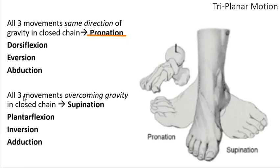The foot is the same — you're getting these three motions usually happening all at once. Instead of trying to identify whether it's dorsiflexion, eversion, or abduction — it's a little bit of all three. We collectively call that pronation. And when the foot is becoming a rigid lever, getting ready to push off for propulsion — overcoming gravity — it's not just plantarflexion, inversion, and adduction in isolation, but a combination of all three. We call that supination. So pronation and supination now refer to movements: are you pronating with gravity or supinating, overcoming gravity?